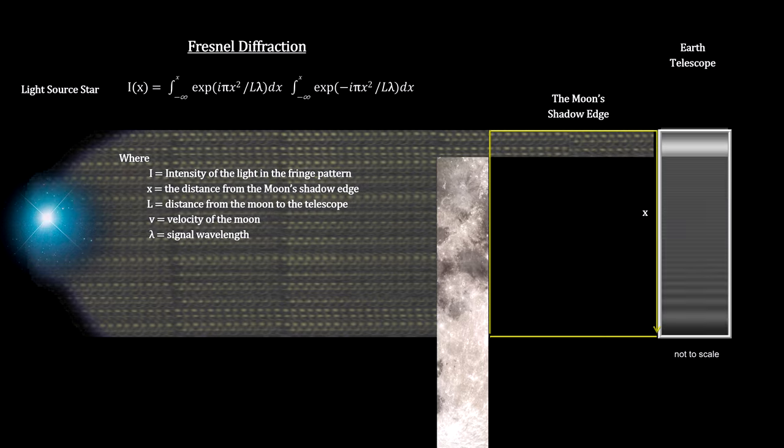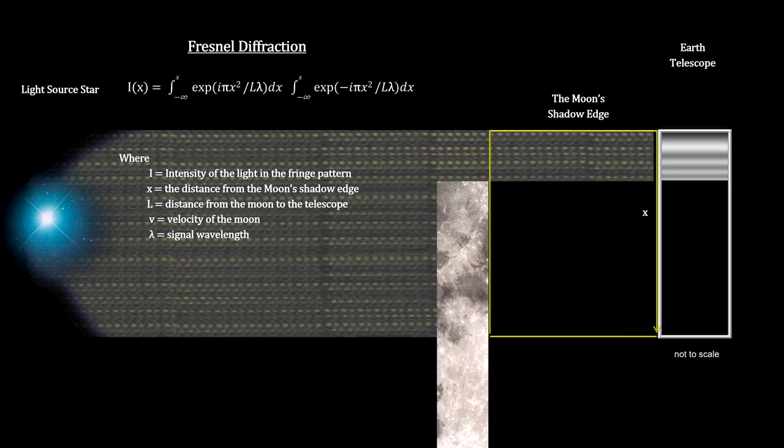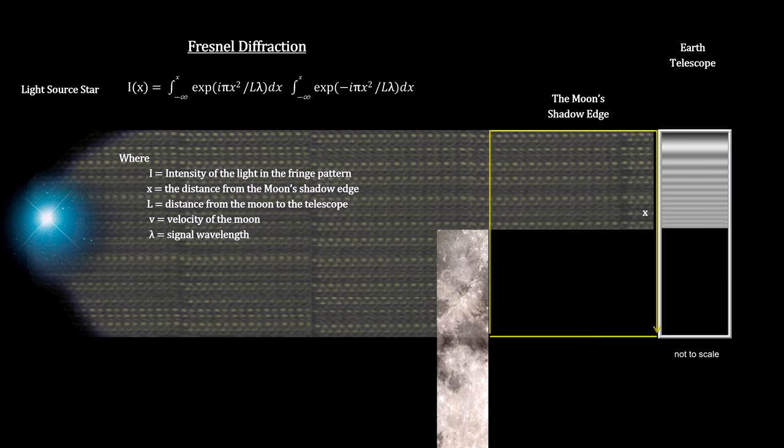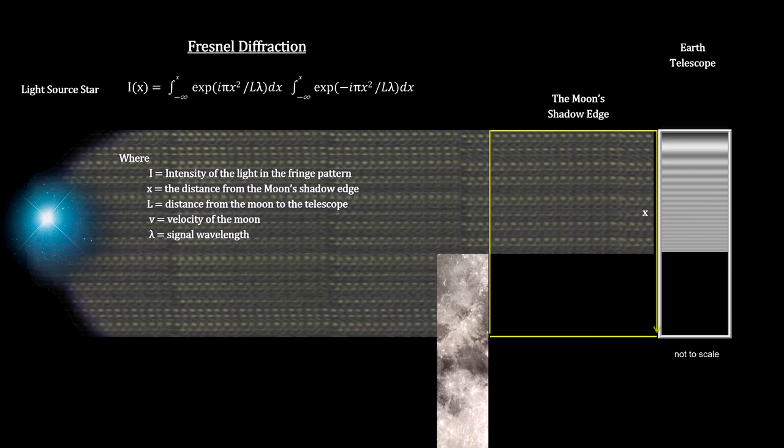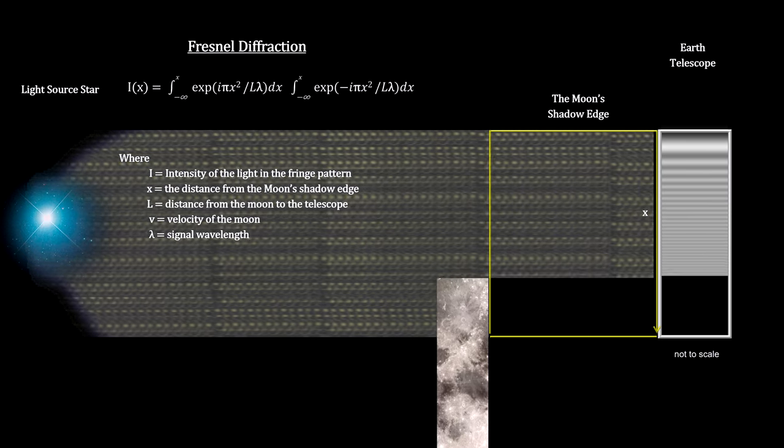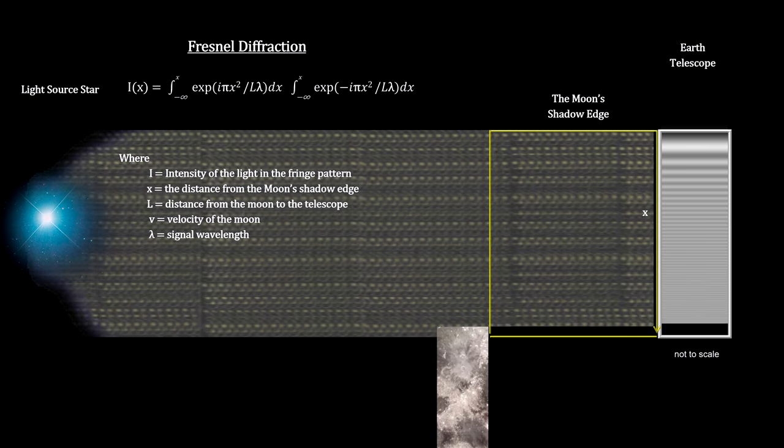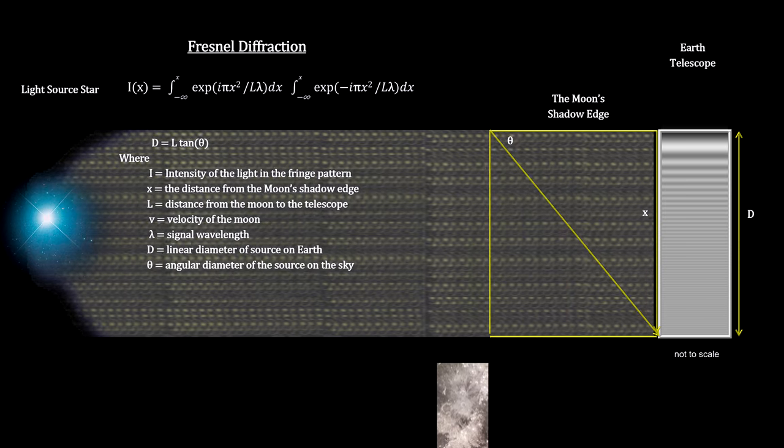Exact knowledge of the location and velocity of the Moon's edge gives us the exact location of the star on the sky, and it gives us the intensity of the light at any distance from the geometric shadow's starting point. It also provides us with the size of the source on the sky.